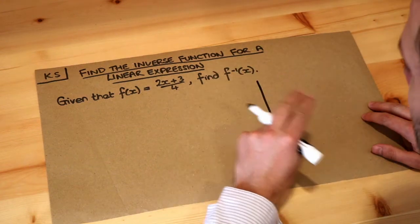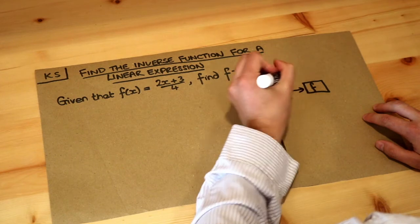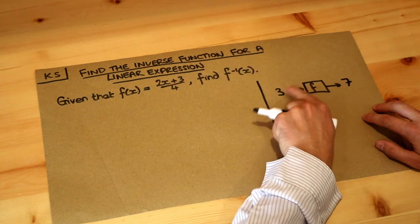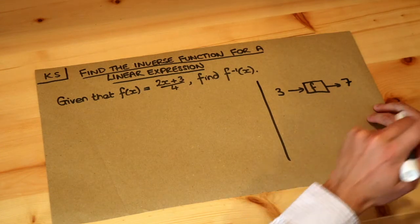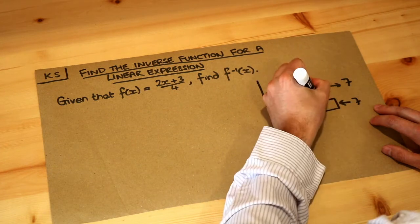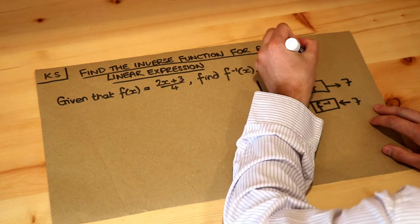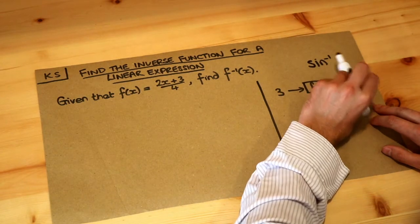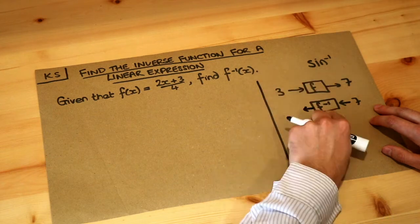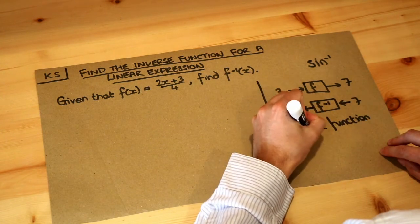Now what do we mean by an inverse function? Remember what a function is: you can have some kind of input, let's say 3, and it does something to that input and spits out an output — let's say 7. It could be that this function doubles the input and adds 1 to give you the 7. Now what the inverse function is, is to basically do the reverse. So if I took that 7 and put it through the inverse function, which we write as f to the minus 1 — that's not a power of minus 1, it just means the inverse function, similar to how sine to the minus 1 means inverse sine — that would get us back to the 3. So the inverse function gets us back from the output back to the input.